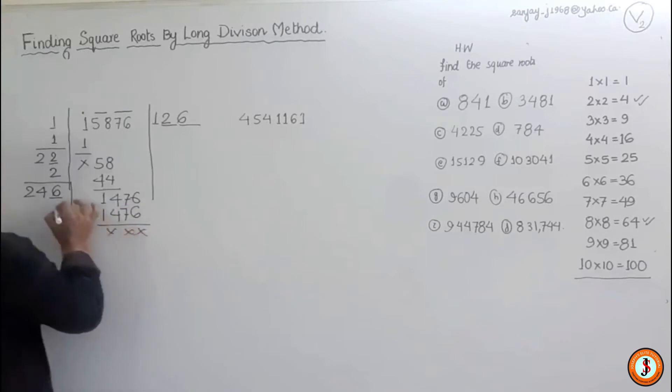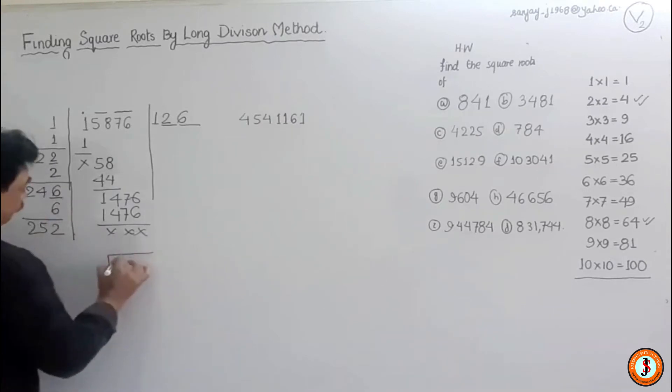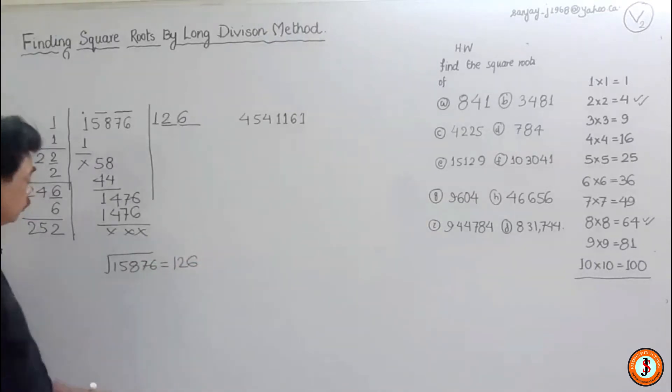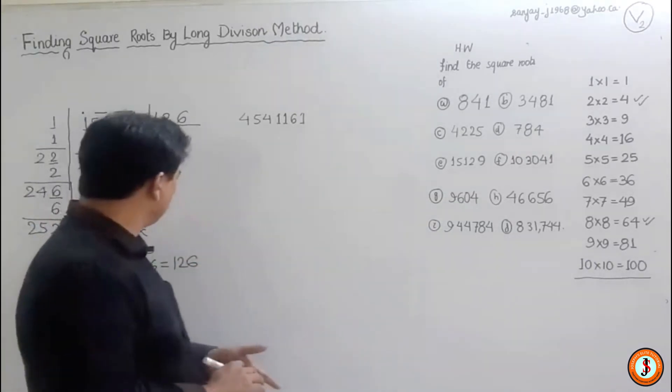Obviously we get this one hundred twenty-six. So 15876 is equal to 126. The square root of 15876 is equal to 126.